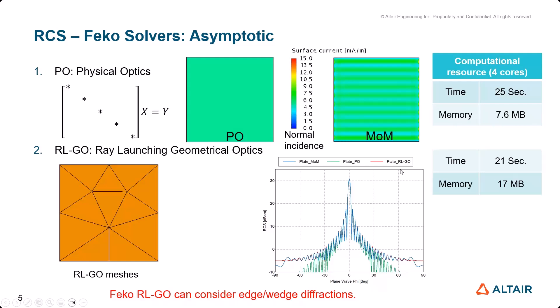Even at normal incidence and oblique incidence, because FEKO RL-GO can consider edge and wedge diffraction. Of course, asymptotic methods also give you good benefits in terms of computational resource time and memory.